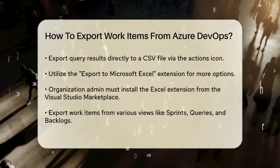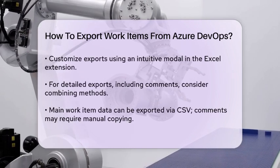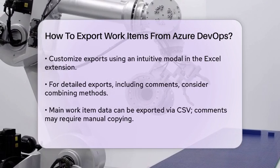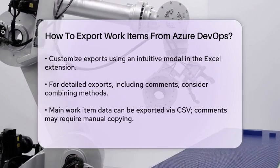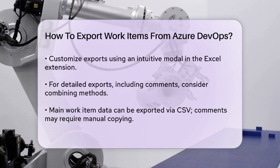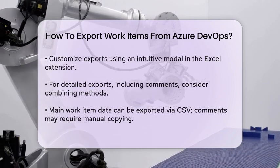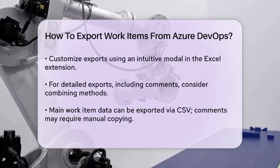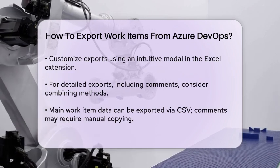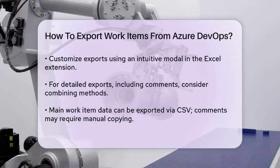If you need more detailed exports, including comments and discussions, you might need to use a combination of methods. While exporting work items to CSV is straightforward, including comments and discussions can be a bit more complex. You can export the main work item data via CSV, but for comments and discussions, you may need to manually copy and paste them into your export or use more advanced scripting if available.